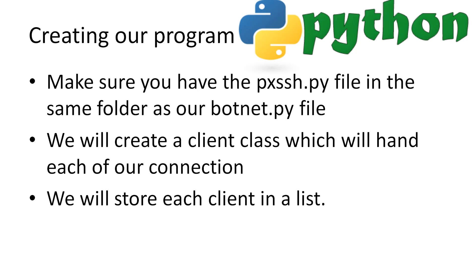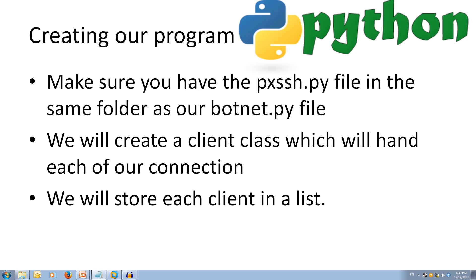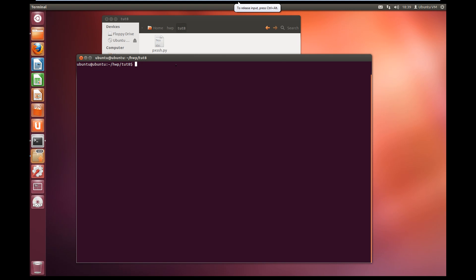Our program is going to use a class called Client to manage our connection to the SSH server. Then we're going to store each of those clients in a list. Remember to make sure that you have the pxssh.py file in the same folder as our code file. I'm going to come over to Ubuntu and start writing. I've got my pxssh.py file in my folder and I'm going to start writing my botnet.